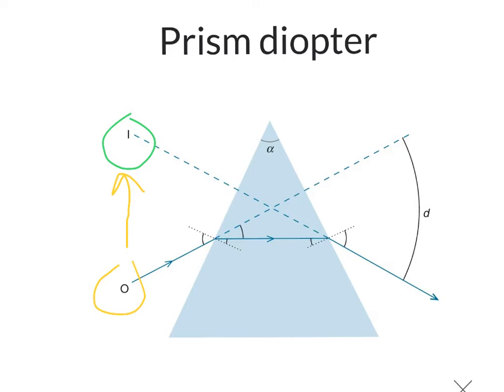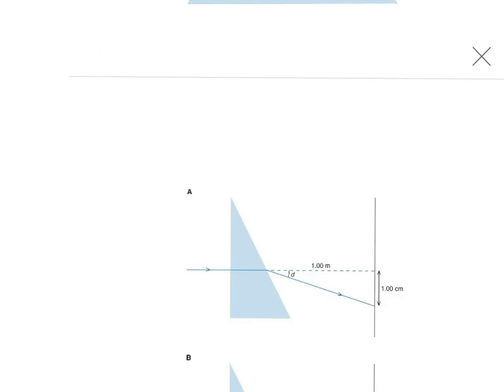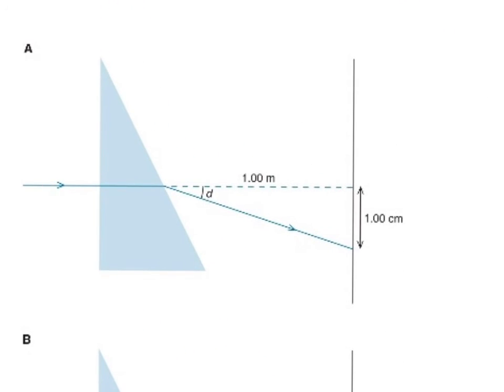Let me show you the definition of a prism diopter. For every meter, a prism diopter will deviate light one centimeter. So in this case, you have one prism diopter, because for every meter, this light deviates one centimeter. That's one prism diopter.